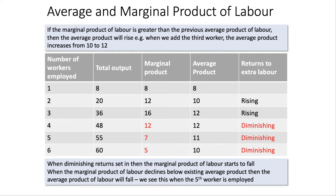The shape of the marginal cost curve is drawn on the assumption that there are diminishing returns to extra units of the variable factor, which is normally labour. Here's a numerical example of the law of diminishing returns: eventually marginal product starts to fall, returns to labour diminish, and eventually that drives down the average productivity of labour.